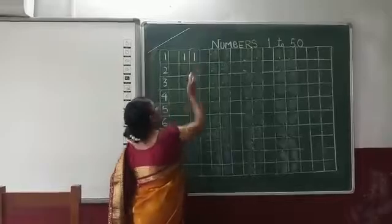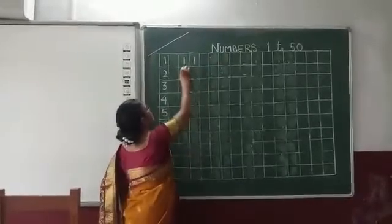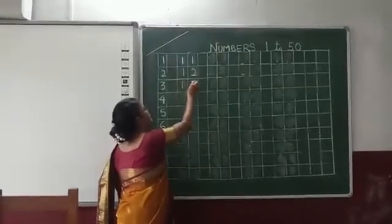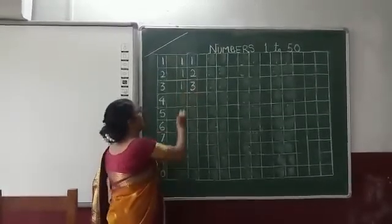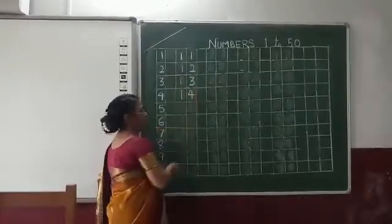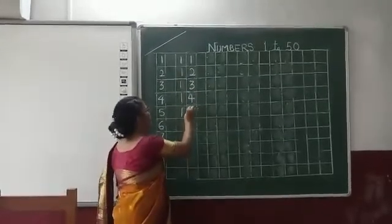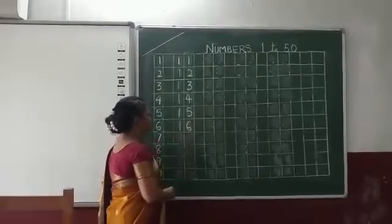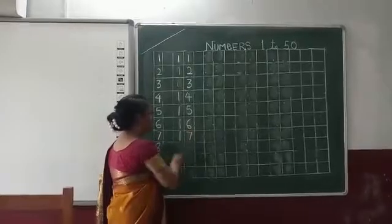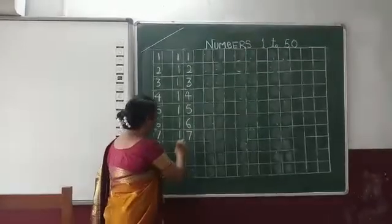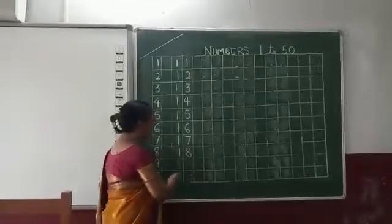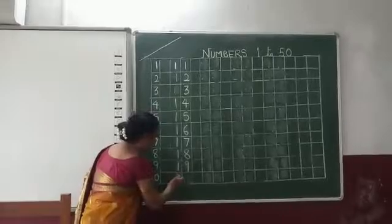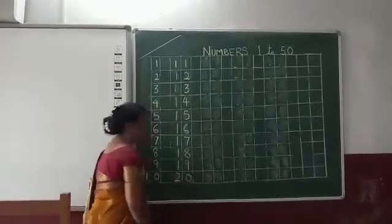Like 1, 1, 11. 1, 2, 12. 1, 3, 13. 1, 4, 14. 1, 5, 15. 1, 6, 16. 1, 7, 17. 1, 8, 18. 1, 9, 19. And 2, 0, 20.